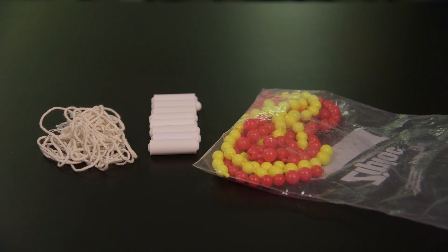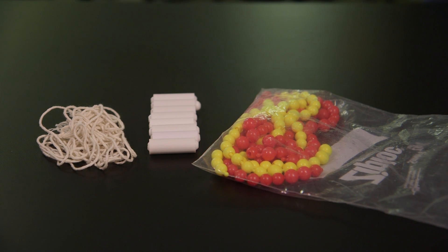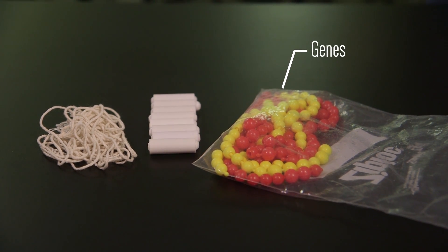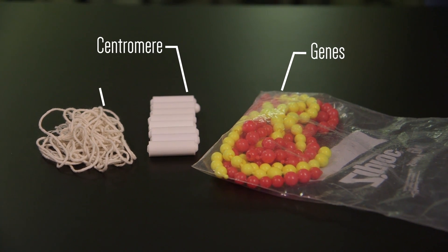Okay, let's make some chromosomes. Your group has a plastic bag of red and yellow beads, and some magnets and string. The beads stand for genes, and the magnets represent the centromere.